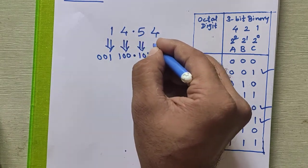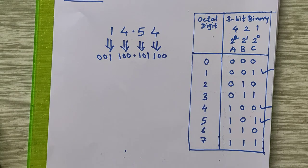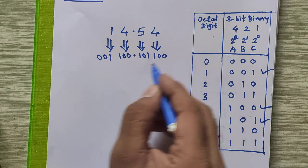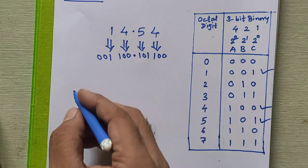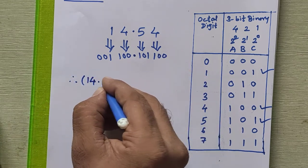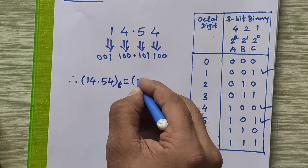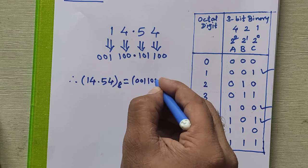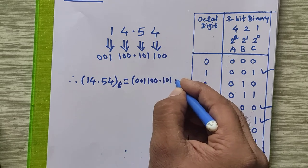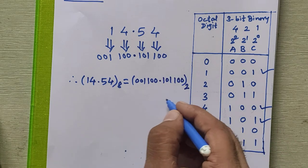This way we can convert any octal number to binary. Now to get the actual result we combine all the binary bits together. Therefore, 14.54 octal is equivalent to 0 0 1 1 0 0 . 1 0 1 1 0 0 in binary. This is our result.